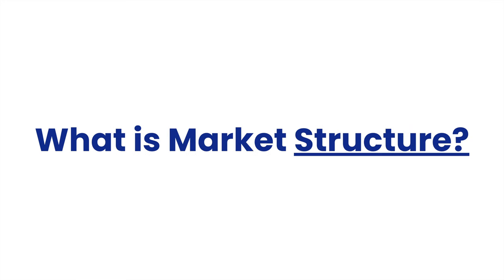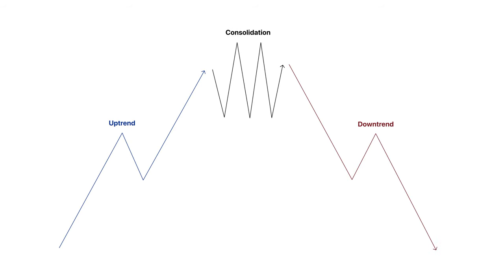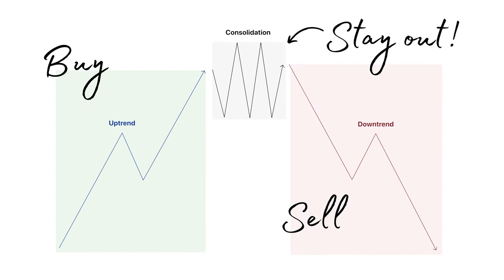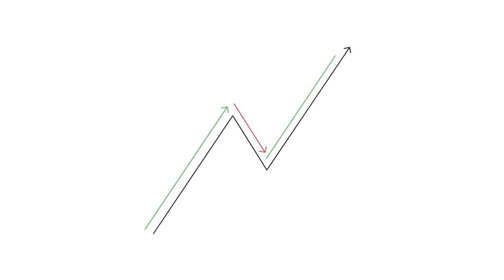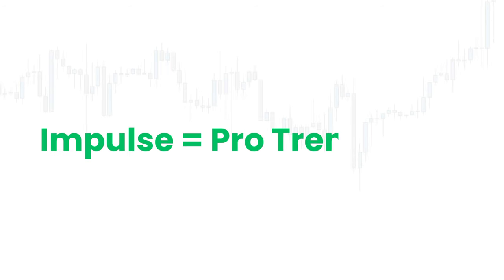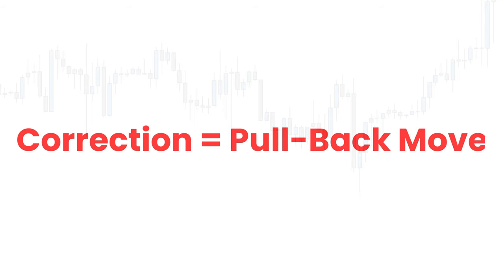So what is market structure? It's just the way the market moves — uptrends, consolidation, and downtrends. These are the three phases of market structure. The idea is we buy through uptrends, sell through downtrends, and stay out during consolidation. During a trending move — not consolidation moves — we get two phases: impulses and corrections. Impulse moves are pro-trend moves and corrections are pullback moves.